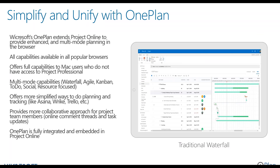Many organizations are looking to simplify and unify disparate work sources, and Microsoft is addressing that with OnePlan. OnePlan extends Project Online to provide enhanced multi-mode planning in the browser without a desktop application. It is a companion product to Project Online and requires the requisite licenses. It provides all capabilities in popular browsers — Chrome, Firefox, Edge, Internet Explorer, Safari. A key benefit is that it offers full capabilities to Mac users, who do not have access to a version of Project Professional on the desktop, giving them much richer capabilities within the Project Online environment.